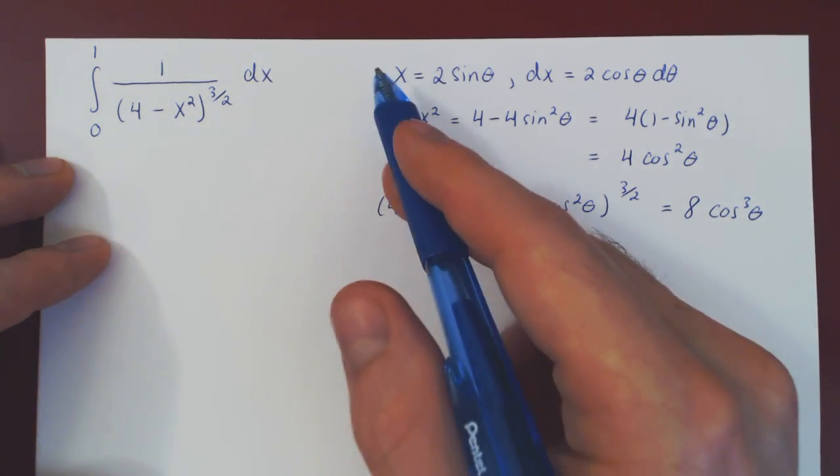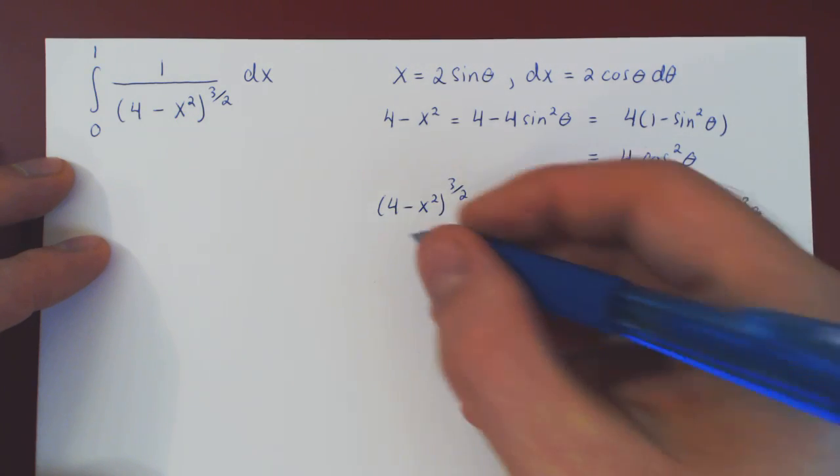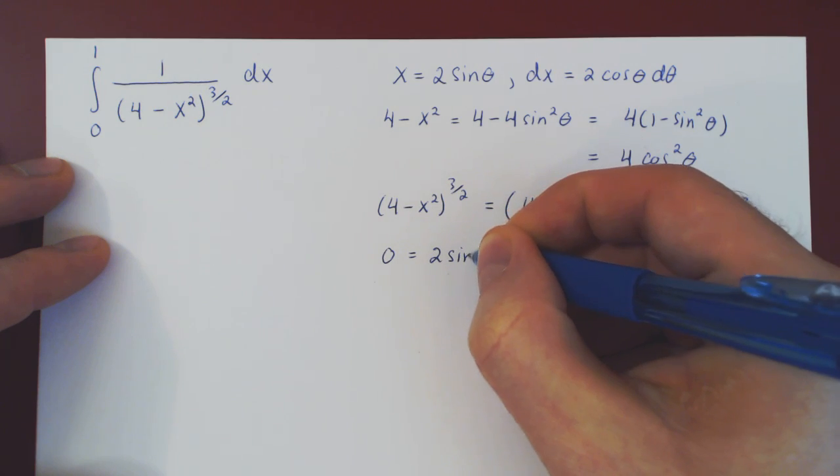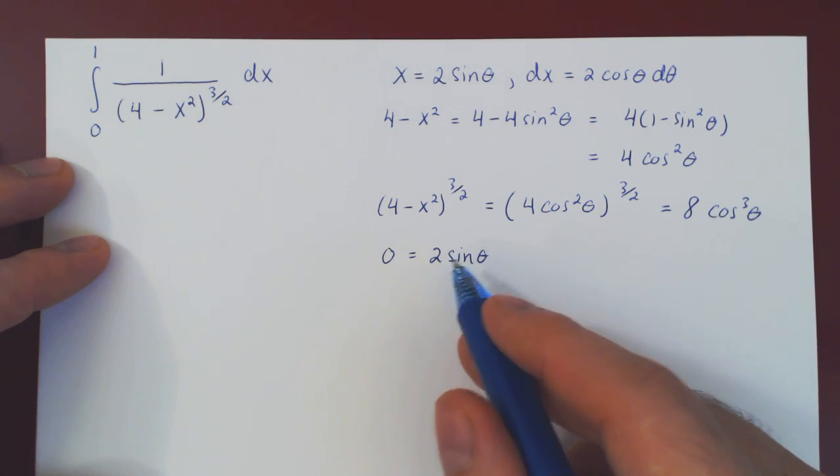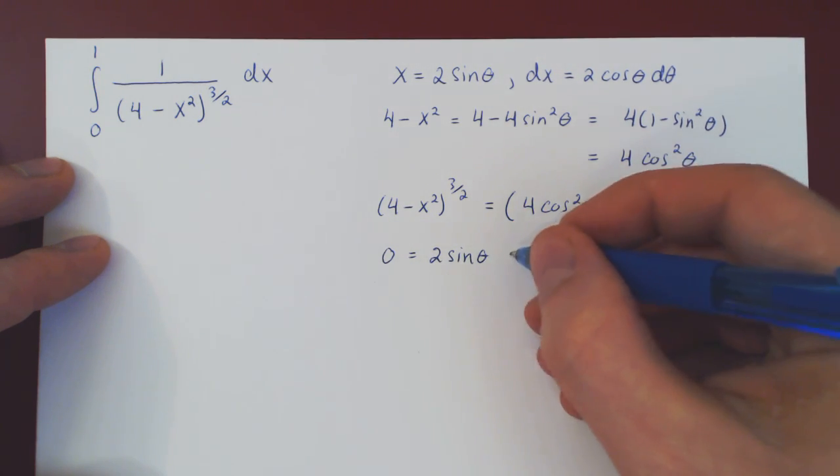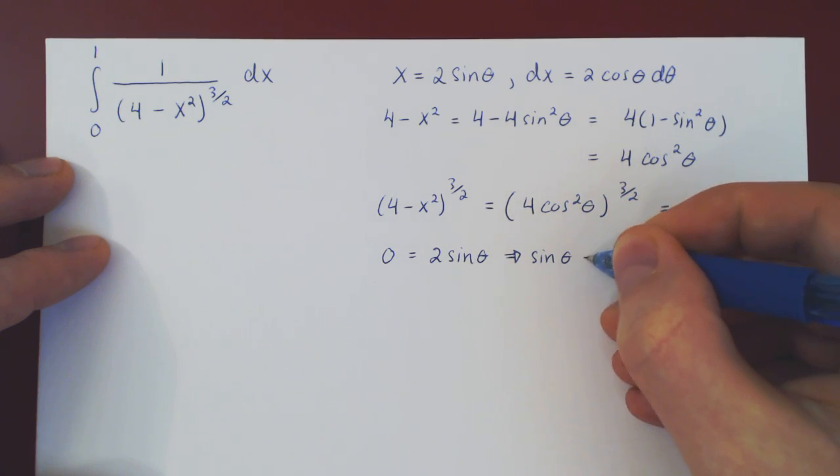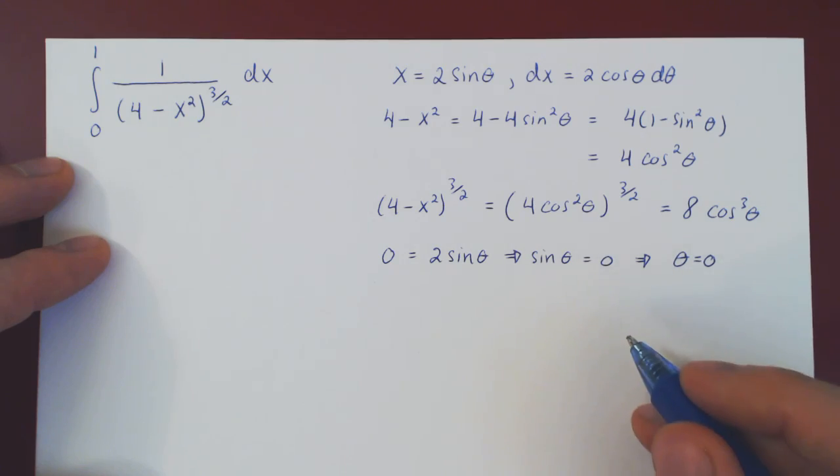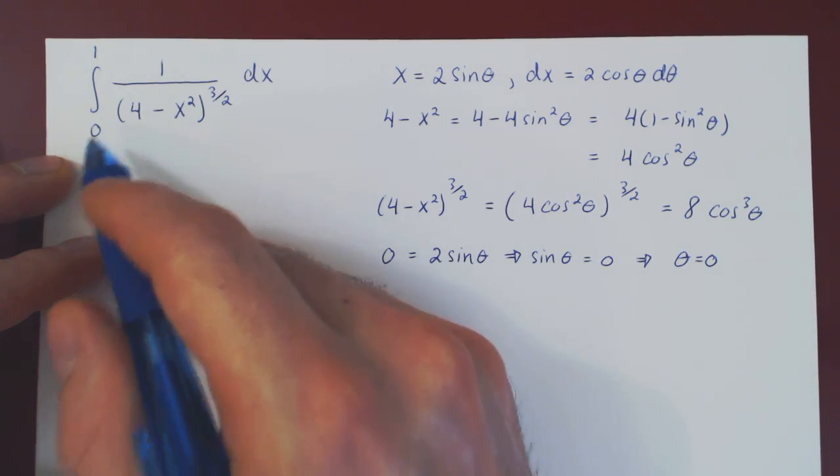So if x is 0, let's plug it in here. So we'll have 0 equals 2 sin theta, but if 2 sin theta is 0, then sin of theta is 0, and of course, sin of theta is 0 when theta is 0. So we have our new bound of integration, which coincidentally stays 0.